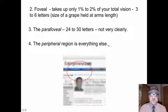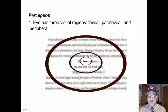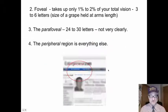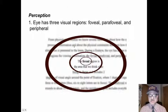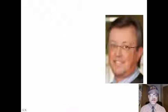The parafoveal is twenty-four to thirty letters that you see, but not very clearly. This would be the parafoveal region. You can make out the letters, but not very clearly. And then the peripheral is everything else that you can detect, but that is clearly out of focus.